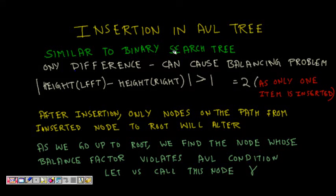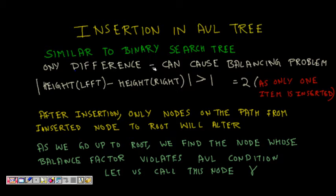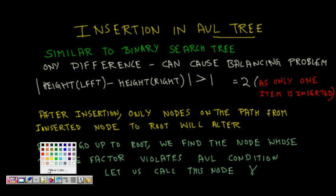In this lecture we are going to learn about how we do insertion in AVL trees. Last class we discussed what is an AVL tree and what is the balance property. We know that an AVL tree is a binary search tree in which the left and right subtrees for each node are balanced.